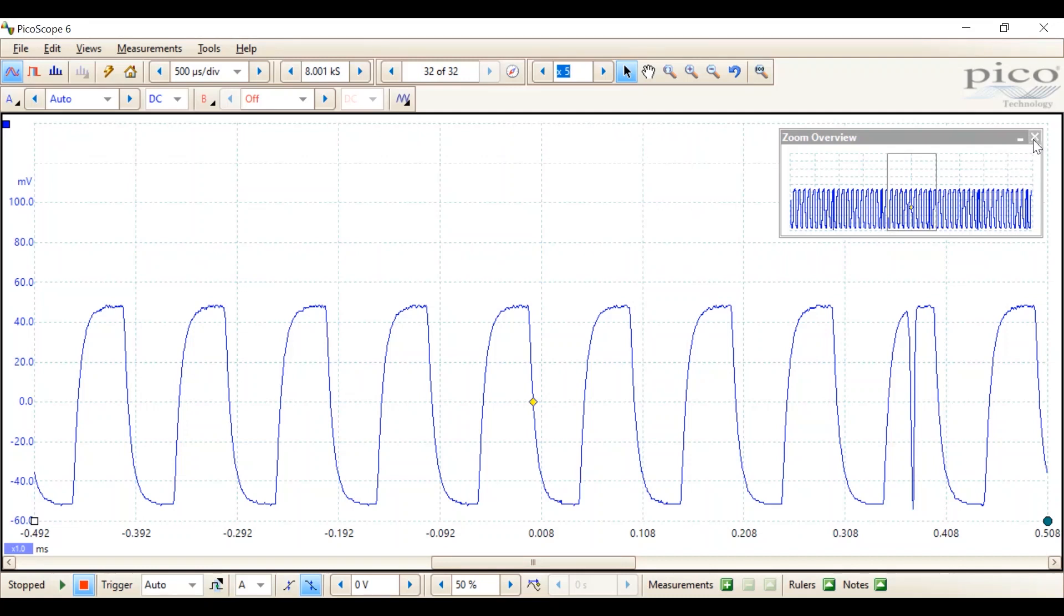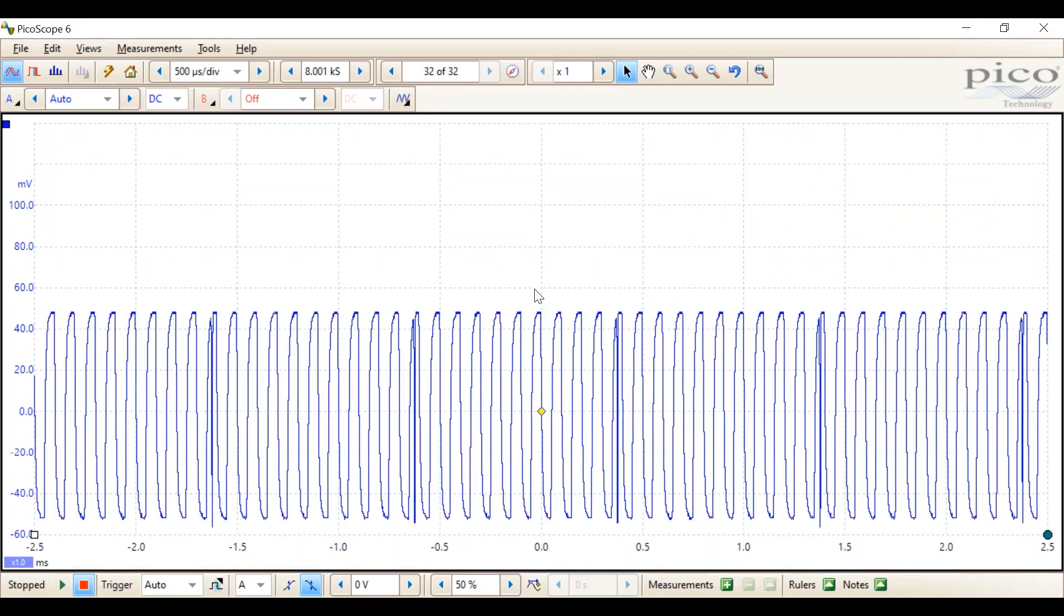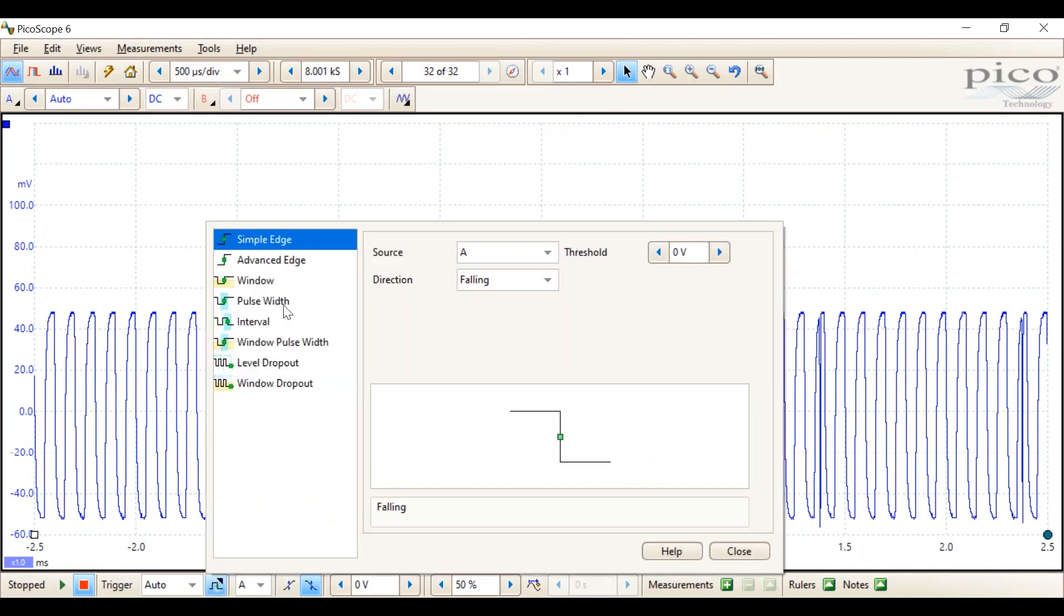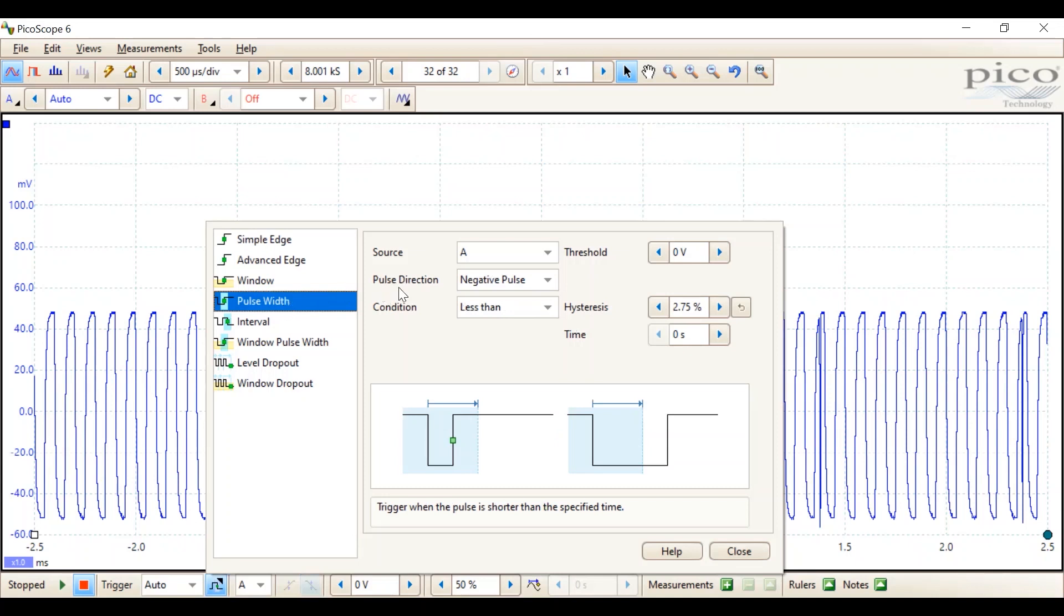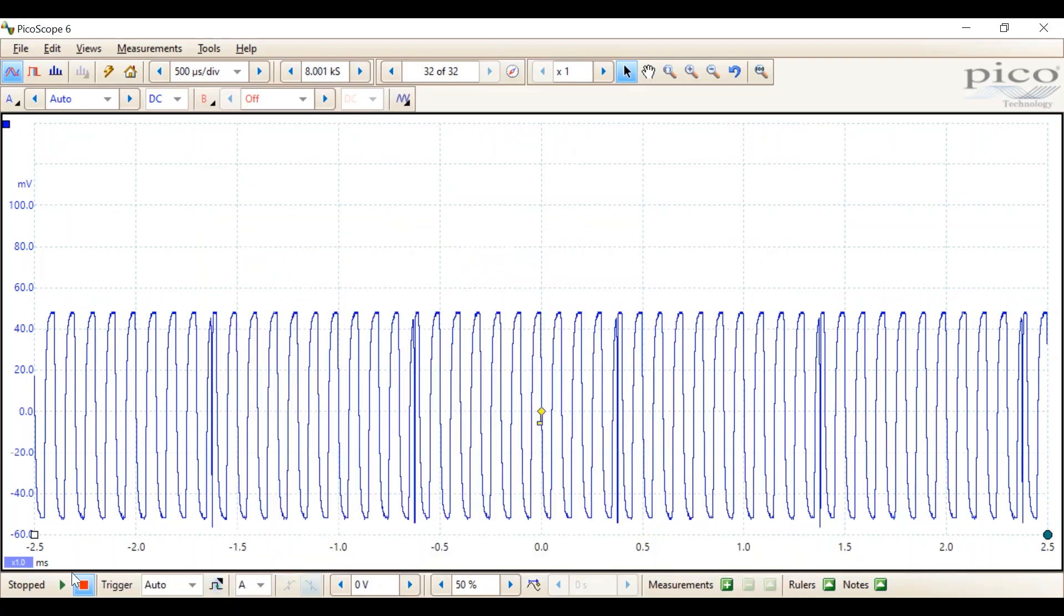We can come out of the zoom, and now we need to set up our trigger. We go into the advanced trigger menu, select pulse width. It's a negative going pulse. It could be a positive going pulse as well. The condition we're looking at is less than 50 microseconds. If we close that and we start the trigger.